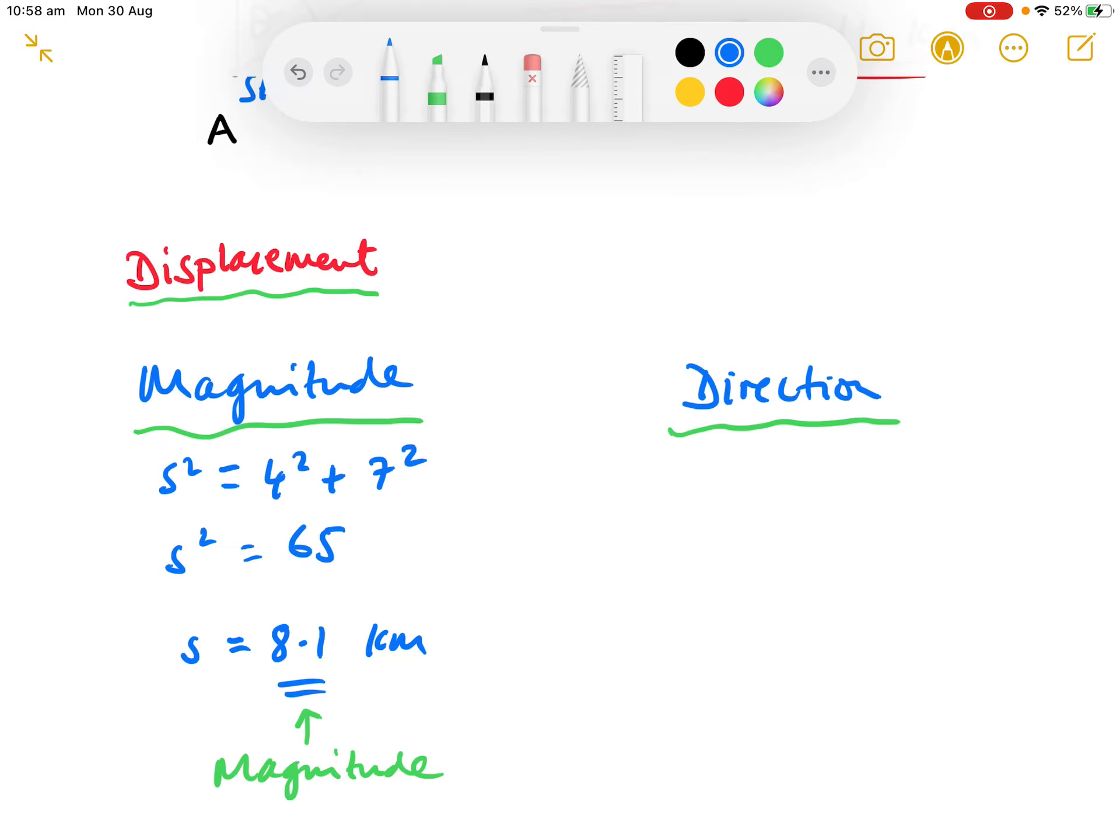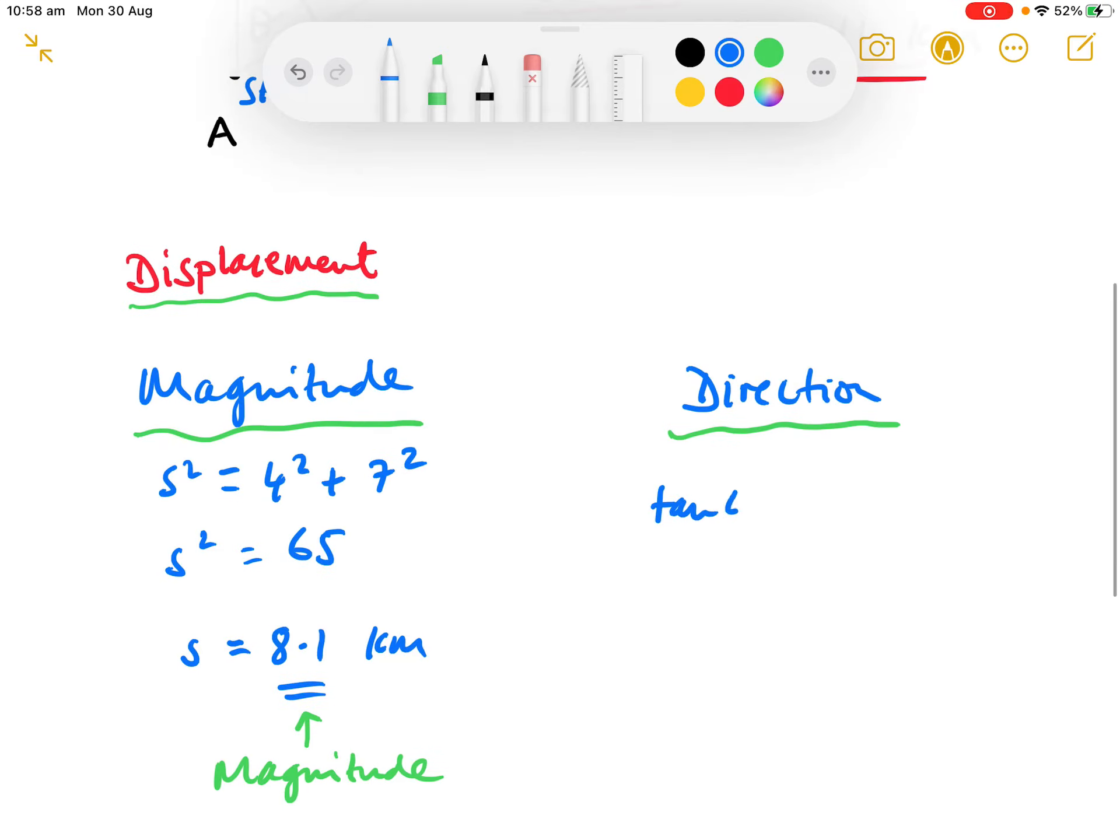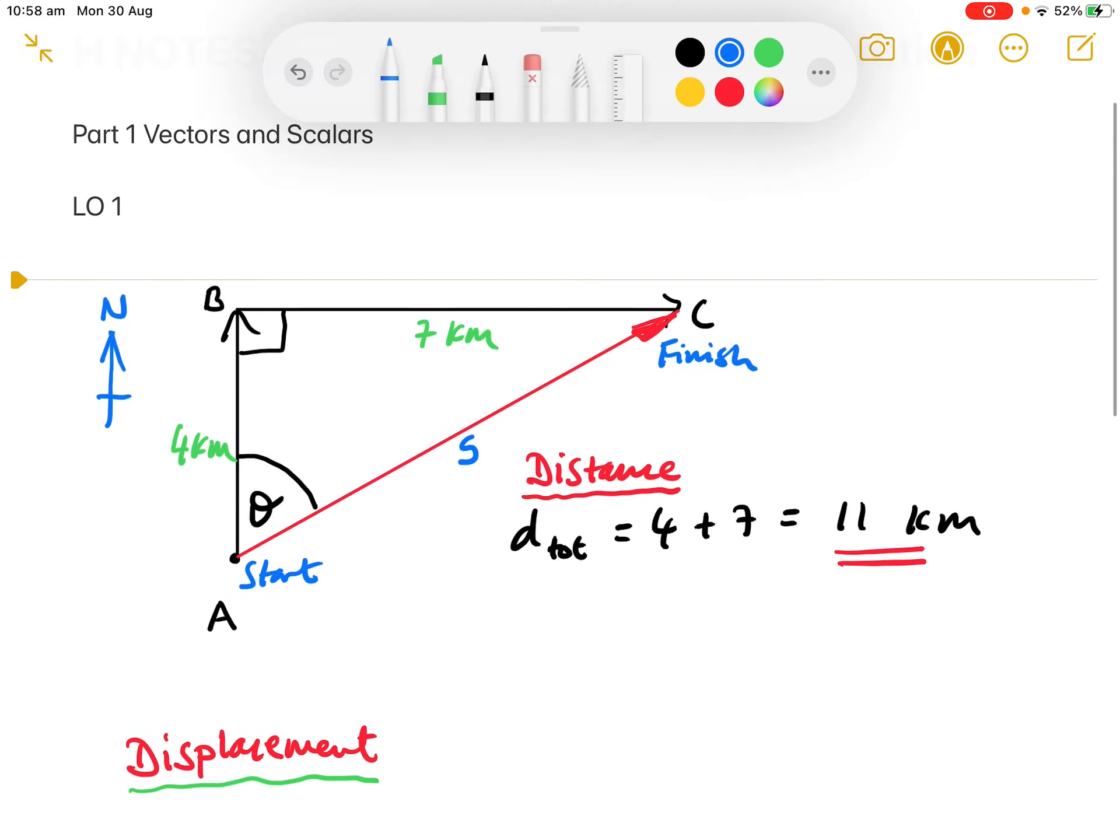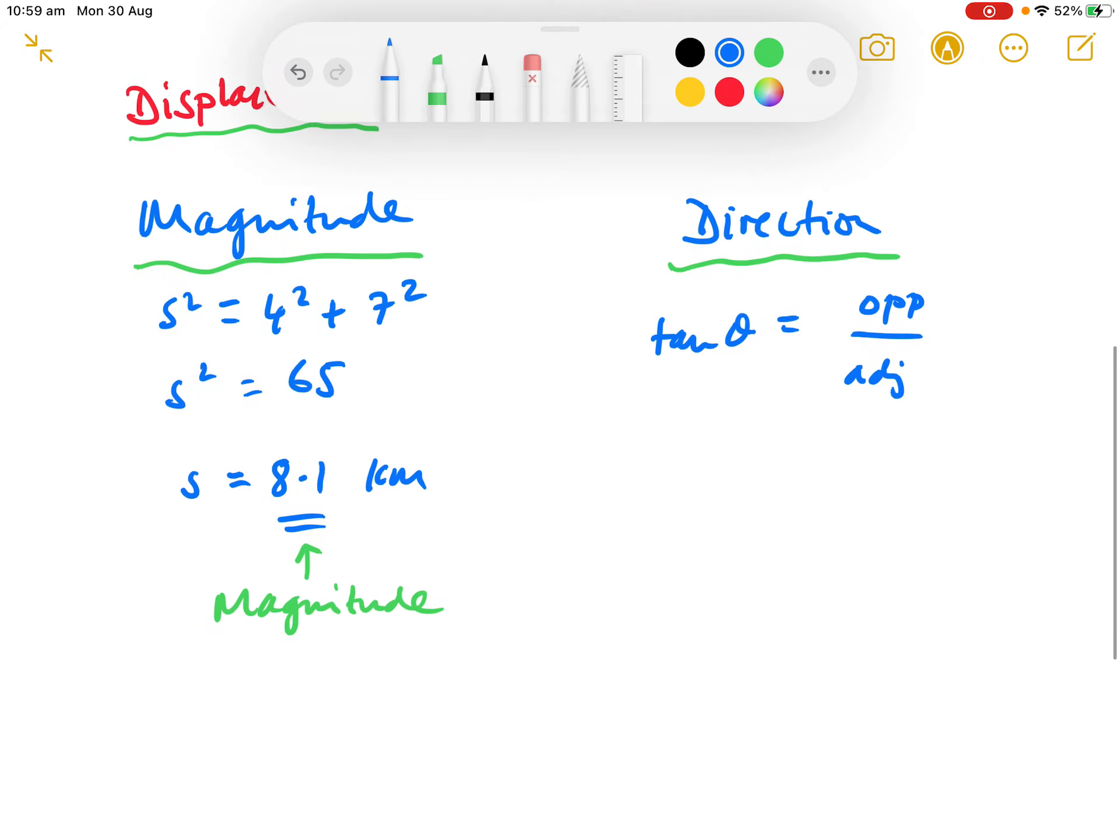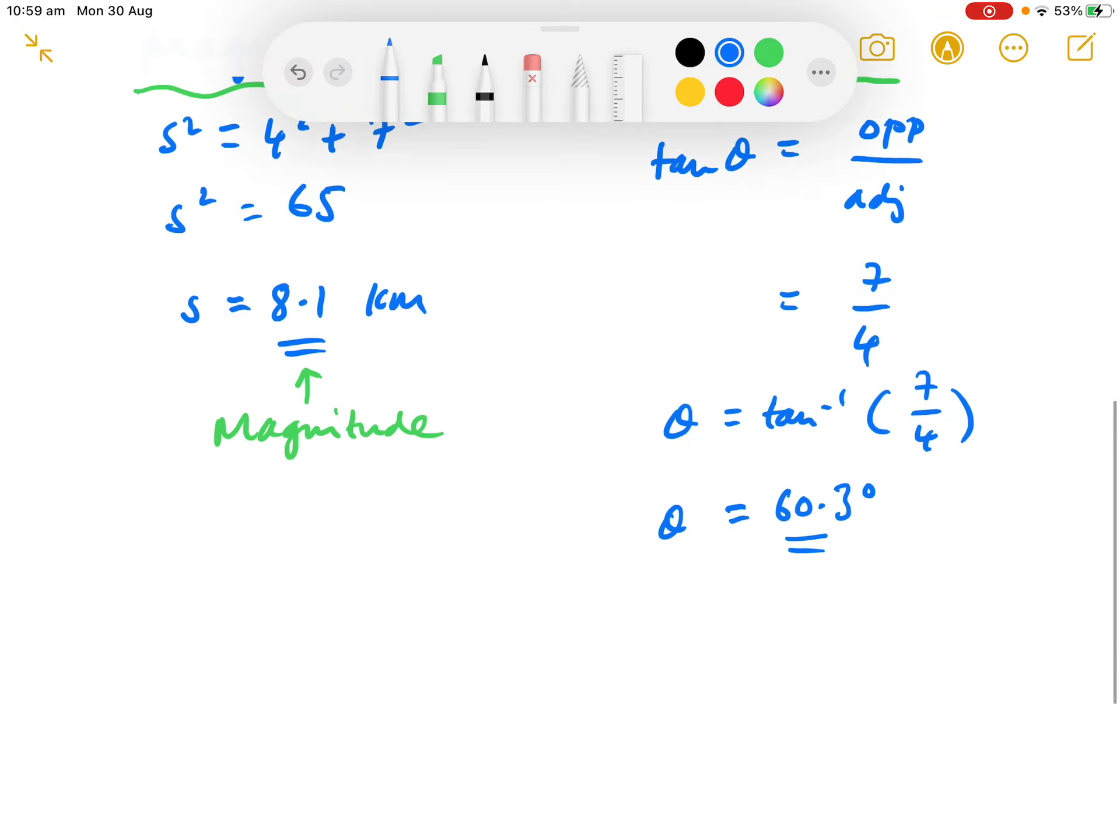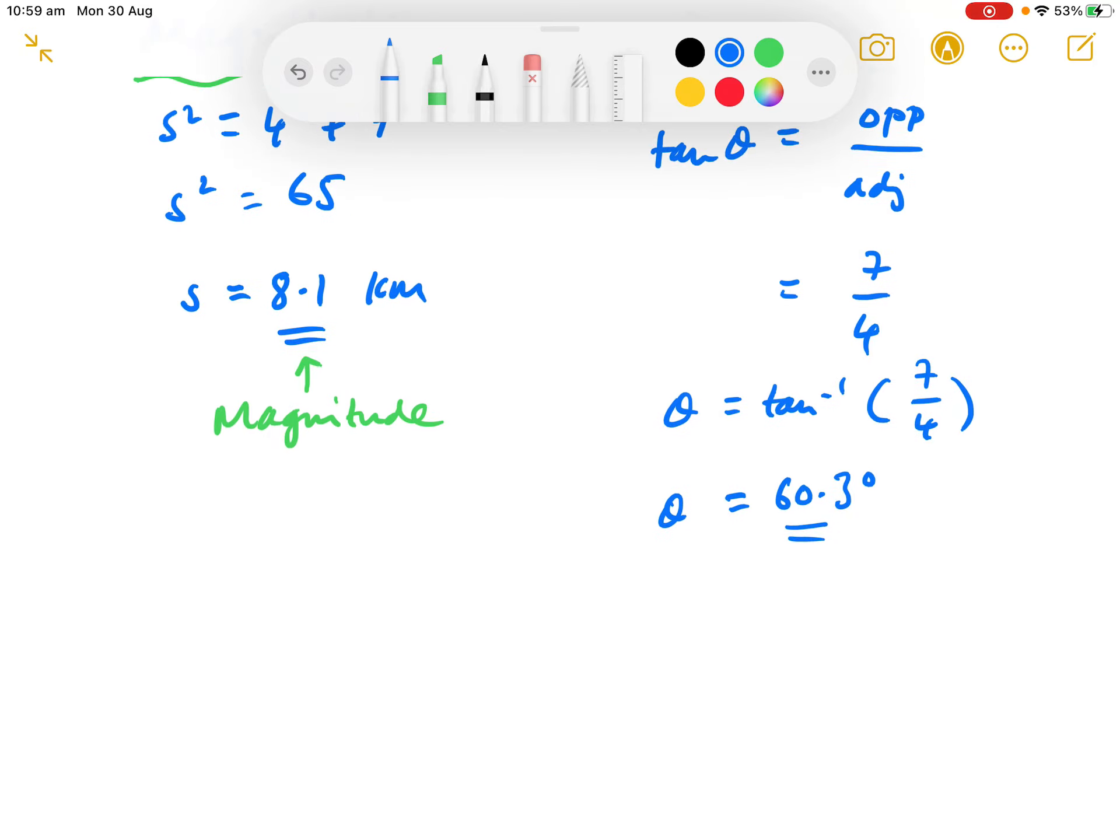What about the direction? For direction, we use tan theta being opposite over adjacent. You can see I've marked in the theta there. The opposite side is 7 and the adjacent is 4. So tan theta is 7 over 4. Theta is the inverse tan of 7 over 4. When you do that, you'll find that theta is 60.3 degrees. That's the direction.